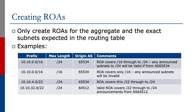10.10.32.0/22 is covered up to a max length of /24 but with origin AS64512. This is a valid ROA covering /22 through to /24 if the prefix announcements come from AS64512. Notice that 10.10.32/22 is a subnet of 10.10.0.0/16.